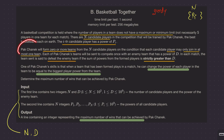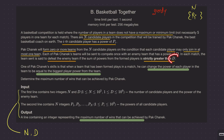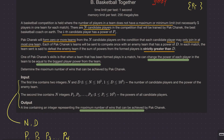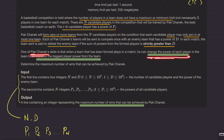Pak Chenek, the coach, wants to form zero or more teams from these N candidates, with the condition that each player may join at most one team. A team defeats another team if the sum of powers of all its players is strictly greater than a constant D. The coach also has a special skill: he can change the power of each player in the team to equal the biggest player's power in that team.